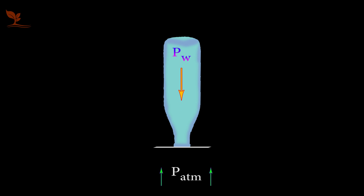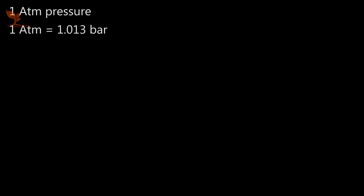Now, in detail and technical, we will see how much pressure is balanced. We know that we have 1 atmospheric pressure, that is 1.013 bar. Pressure is force over a particular area. So, the formula is P equals FW divided by A.